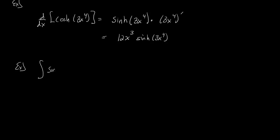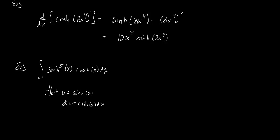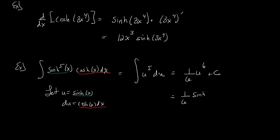Now let's integrate sinh⁵(x) · cosh(x) dx. This calls for u-substitution. Let u = sinh(x), so du = cosh(x)dx — that cosh(x)dx is our perfect du. The integral becomes ∫u⁵ du = (1/6)u⁶ + C. Transforming back, the answer is (1/6)sinh⁶(x) + C. A nice, clean problem — nothing too difficult.